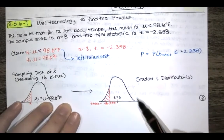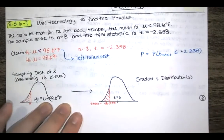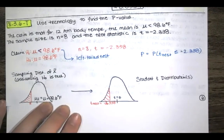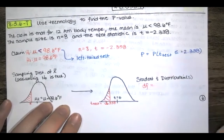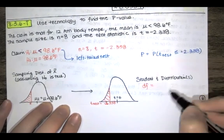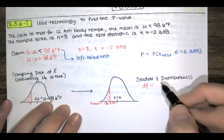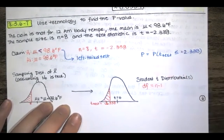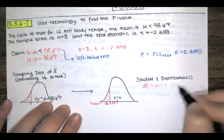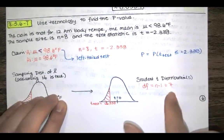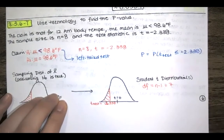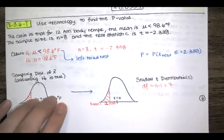We're looking at a student t distribution, but we're looking at a specific one that is associated with having a sample size of 8. So if the sample size is 8, we say that the degrees of freedom of our sample is given by one less than the sample size. So that's 7, and that degrees of freedom 7 is associated with this picture, this particular student t distribution.